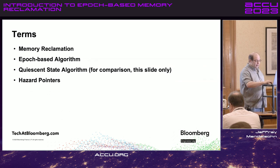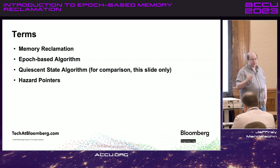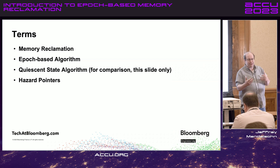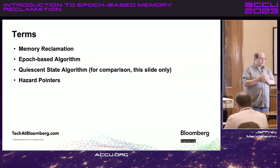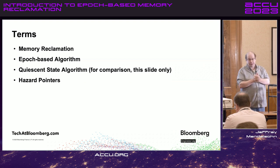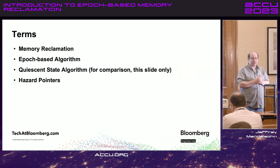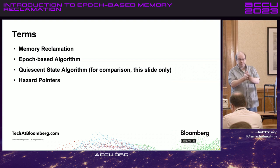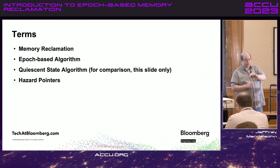So: memory reclamation. Normally when you think of removing a node from a data structure, you just delete it. But when you have multiple threads accessing that data structure, some of those threads can be reading the node even as you're trying to delete it. The memory reclamation problem is: how do I know when it's safe to delete a node?